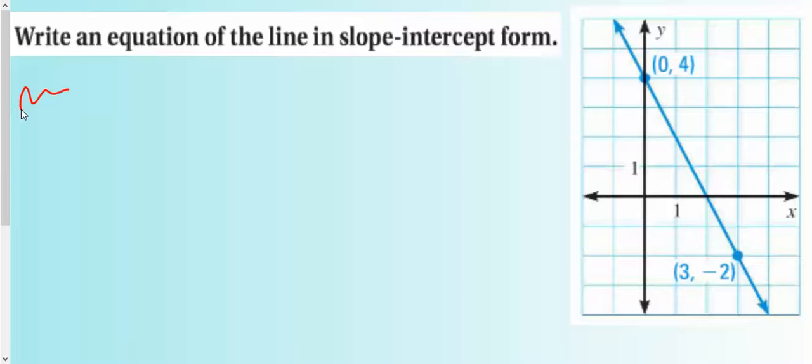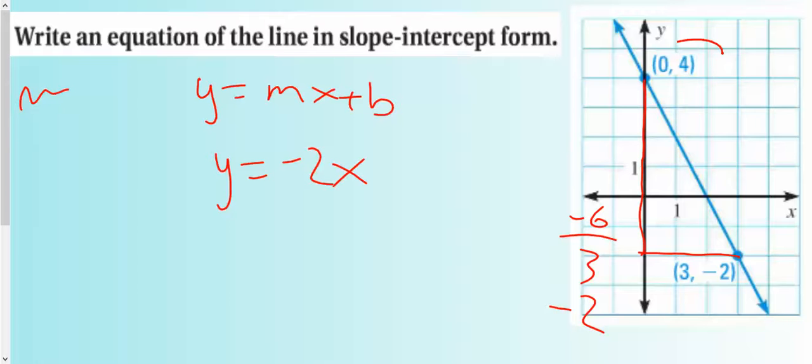Write the equation of the line in slope-intercept form. We have y equals mx plus b. b is our y-intercept, and then we have our slope. I'm just going to do rise over run here: down 1, 2, 3, 4, 5, 6, down 6, so that's negative 6, over 1, 2, 3, over 3. I'm going to simplify that to negative 2. So our m value is negative 2, and our y-intercept is right there at 4. That is the equation of the line in slope-intercept form.